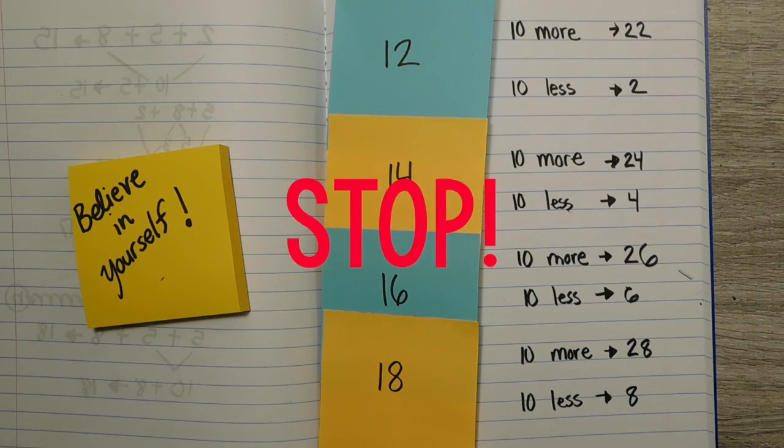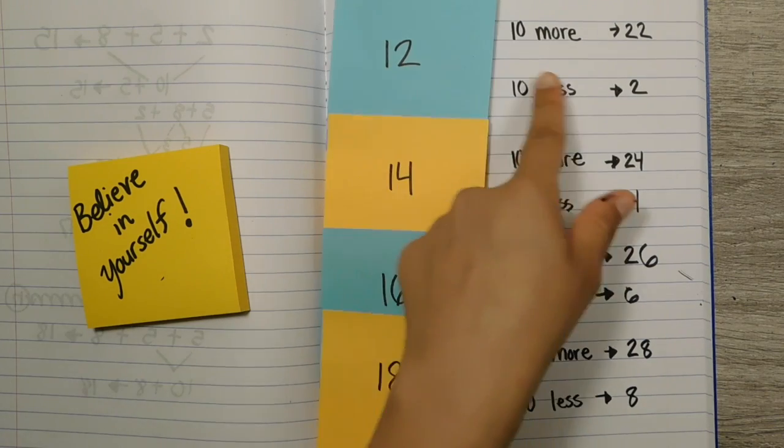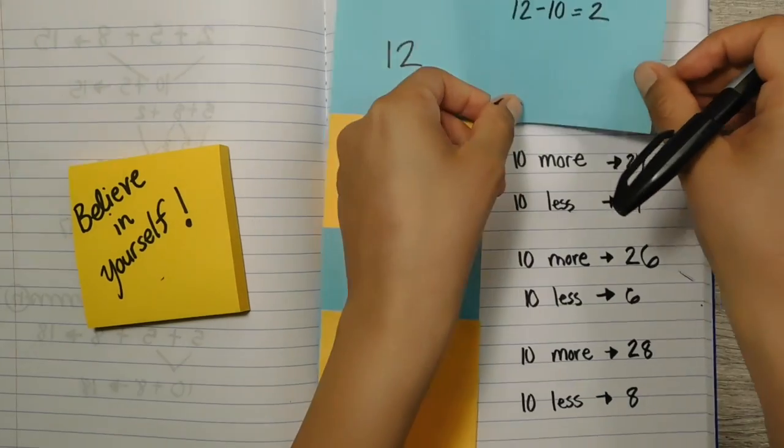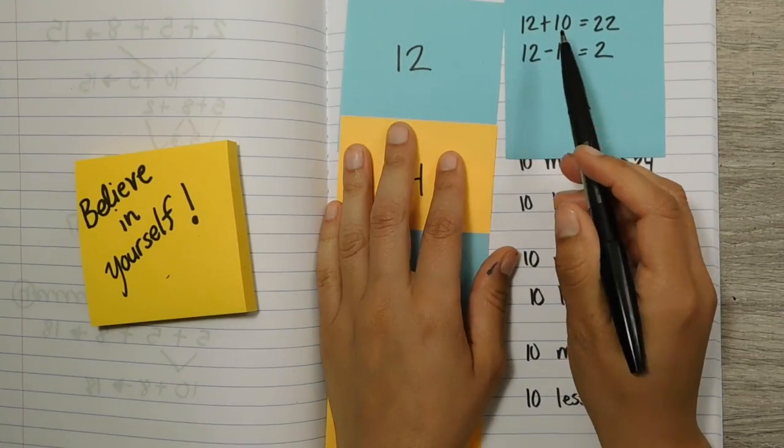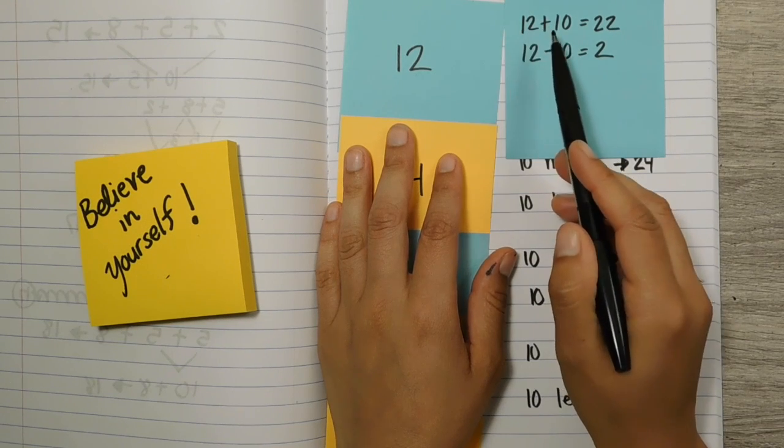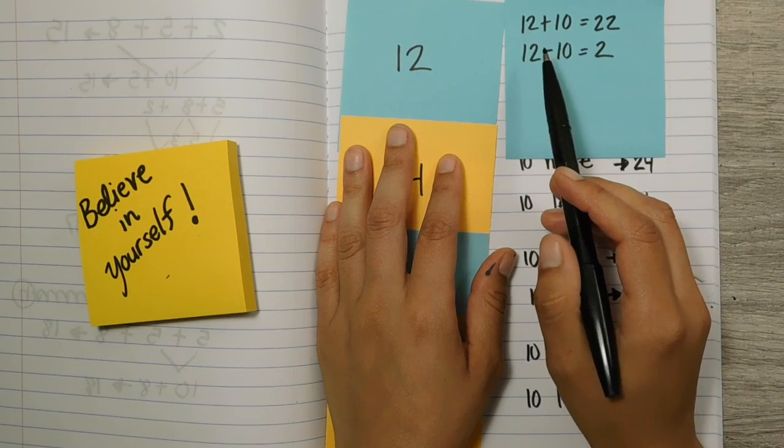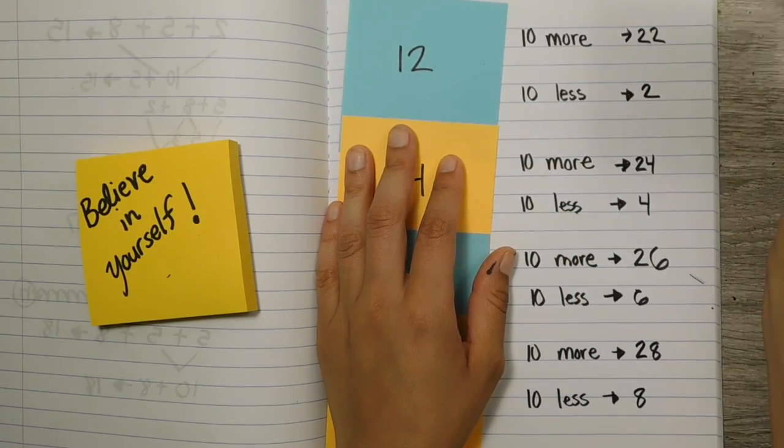Okay, come back together, stop. Okay, so let's see how far you got. Ready? So if you wrote the number sentences up here to match, you probably wrote something like this. Where 12 plus 10 more equals 22, and 12 take away 10 equals 2 to match what we practiced up here.